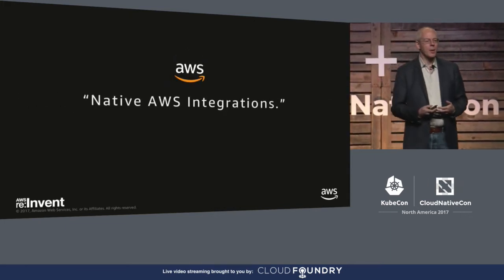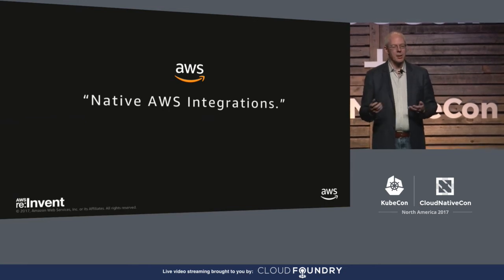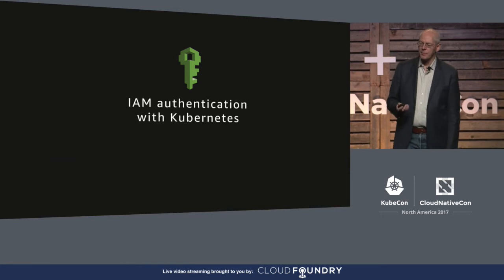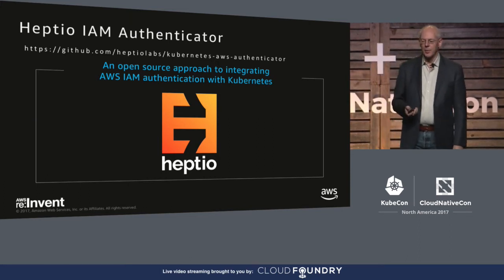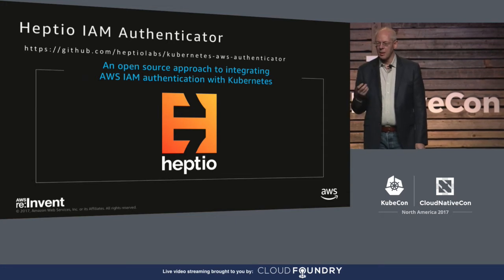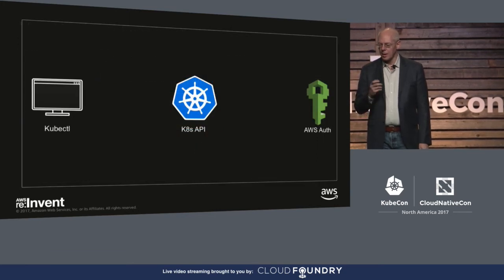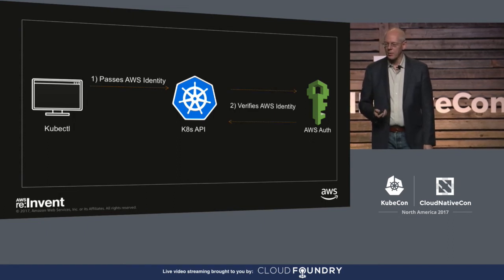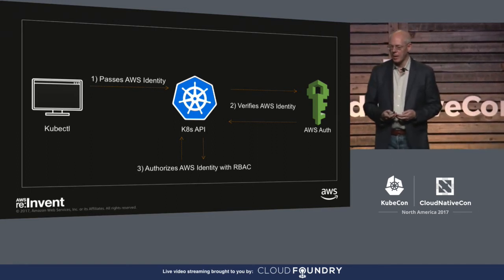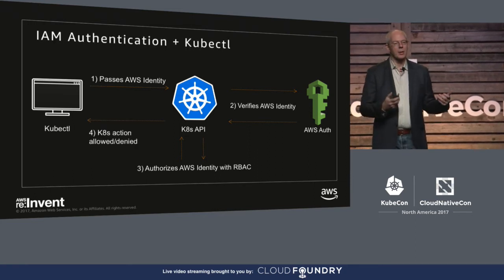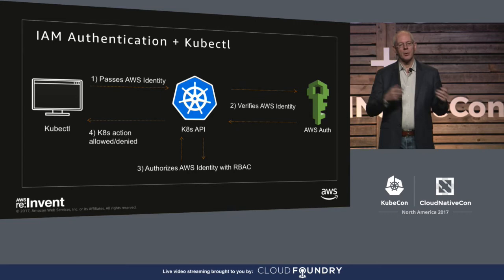The other thing is we want native AWS integrations — where you want to connect into an AWS feature, we want to make that easier and do the heavy lifting for you efficiently. One example is IAM authentication. We have identity access management and we need to be able to authenticate into AWS, so we've been working with Heptio on their IAM authenticator as an open source project. Here's how it works: kubectl passes in an identity that goes to authentication, which is looked up in RBAC within Kubernetes, controlling what you can and can't do in your cluster. That way we can set up an AWS identity role that maps back in.